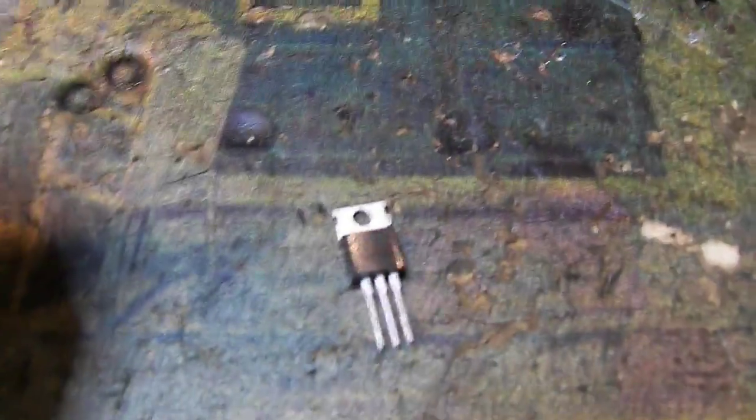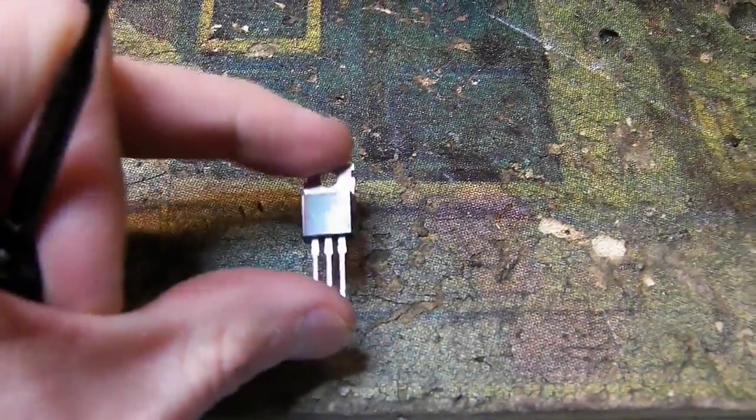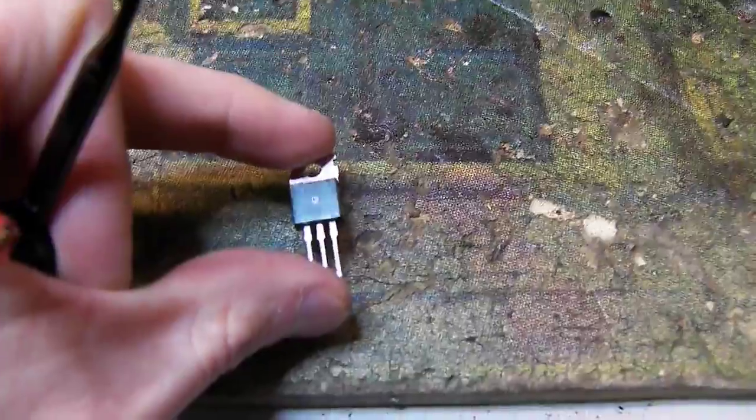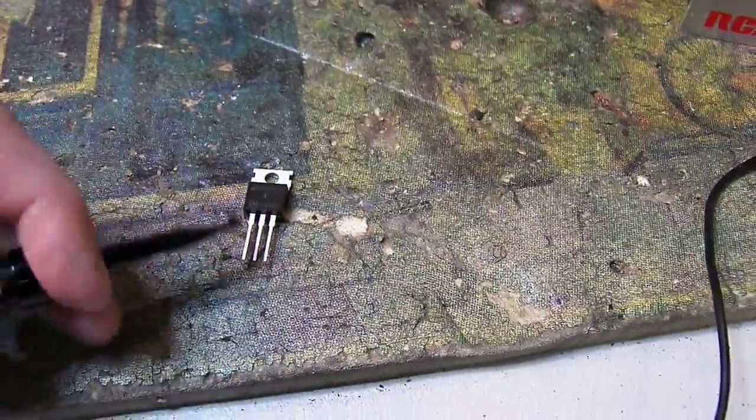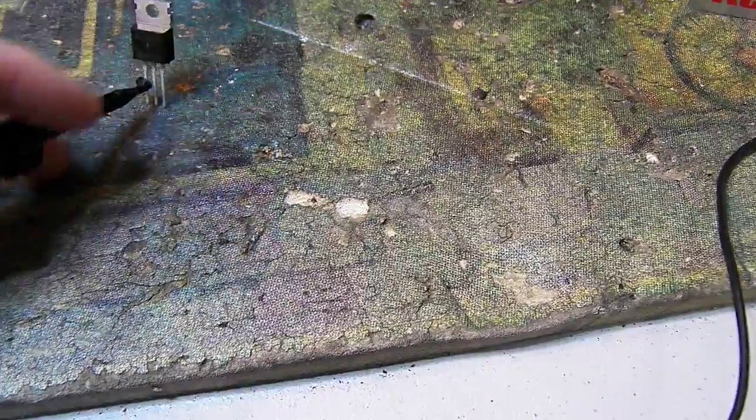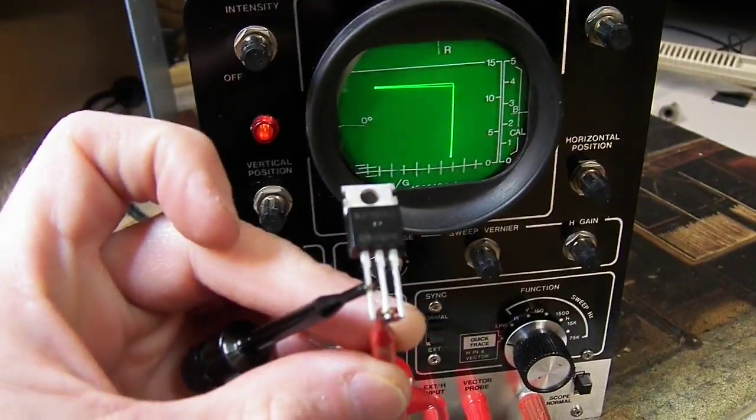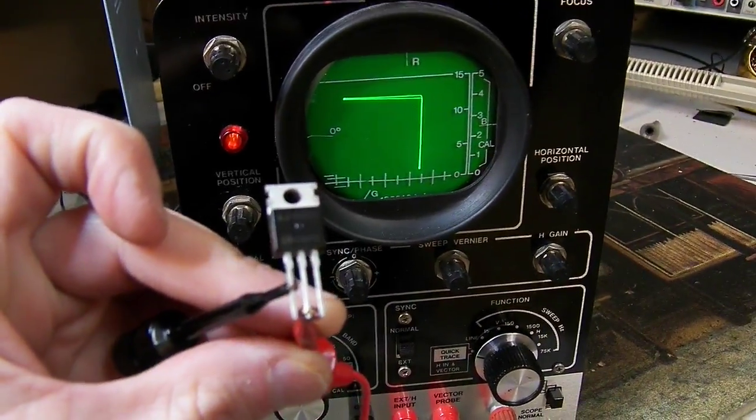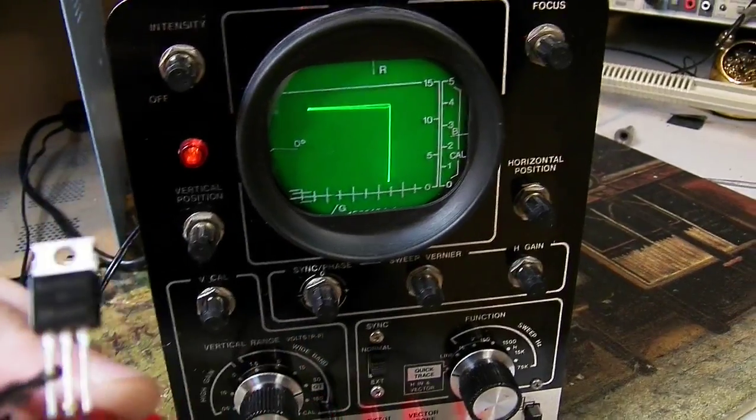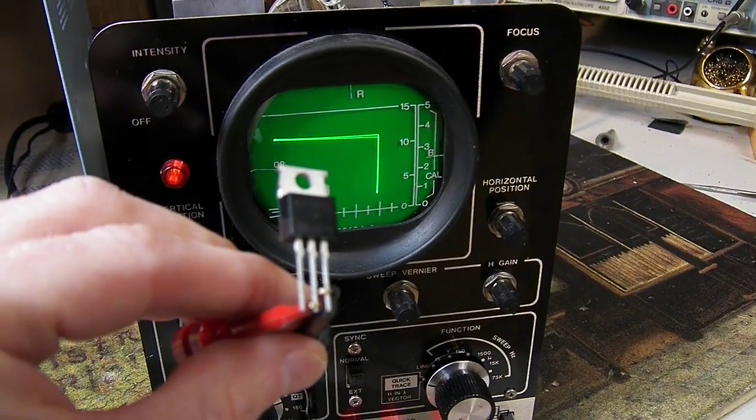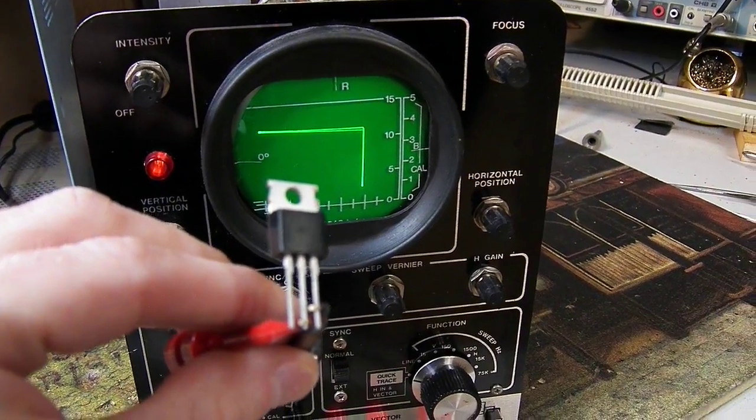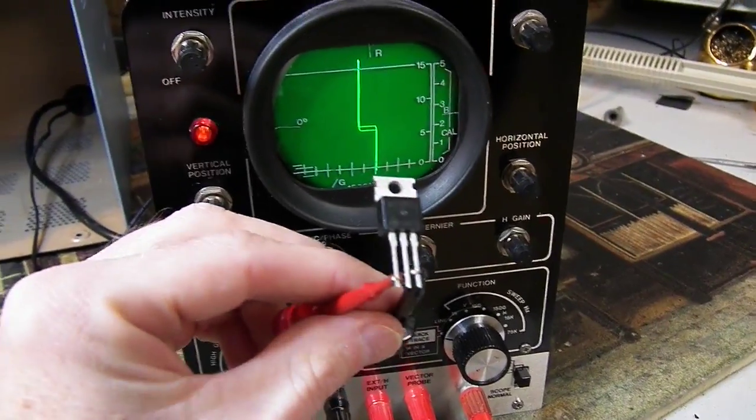Okay, here's this typical driver transistor. It's an MJE 15031. We'll connect that up. Okay, there it is connected to pins 1 and 2. There's pins 2 and 3. And pins 1 and 3.